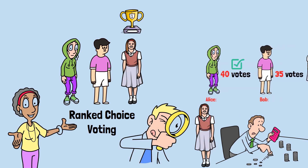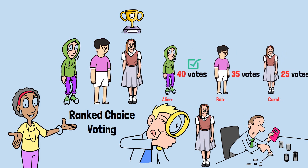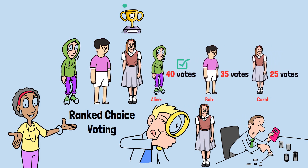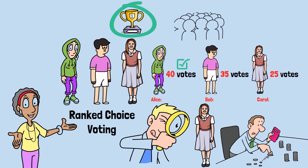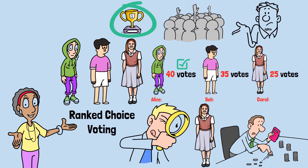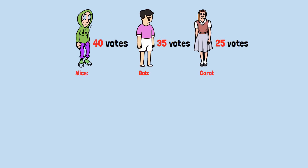But hold on. In the first system, Alice won. In the second system, Carol won. Same voters, same preferences, different winner. Which system is fair? Which one represents what people actually want?